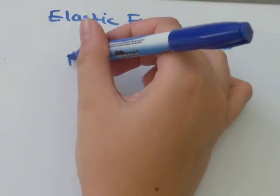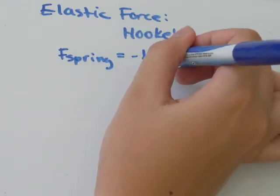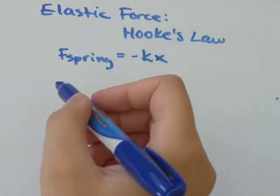Hooke's Law says that the force of the spring equals negative kx. So let's talk about what that means for a sec.